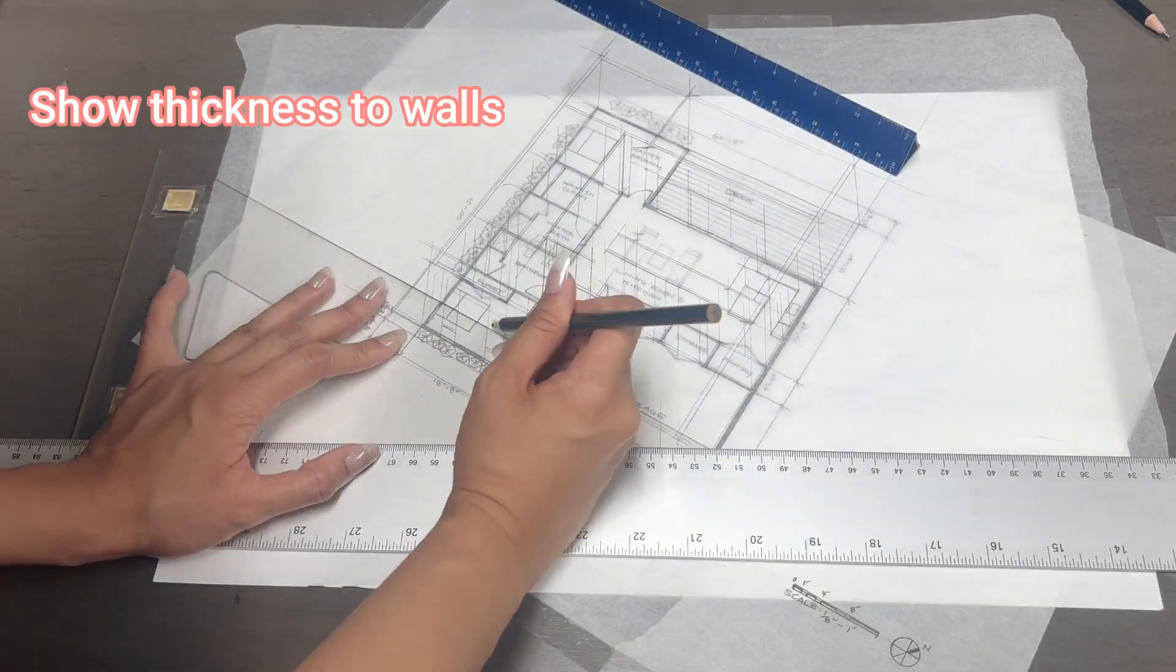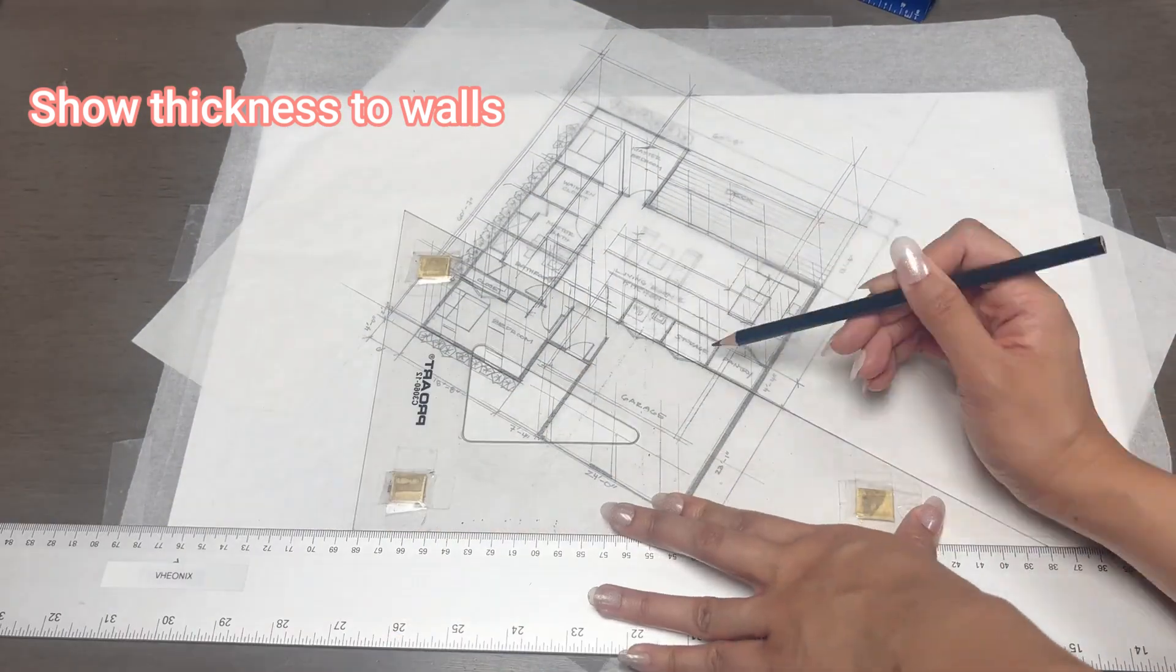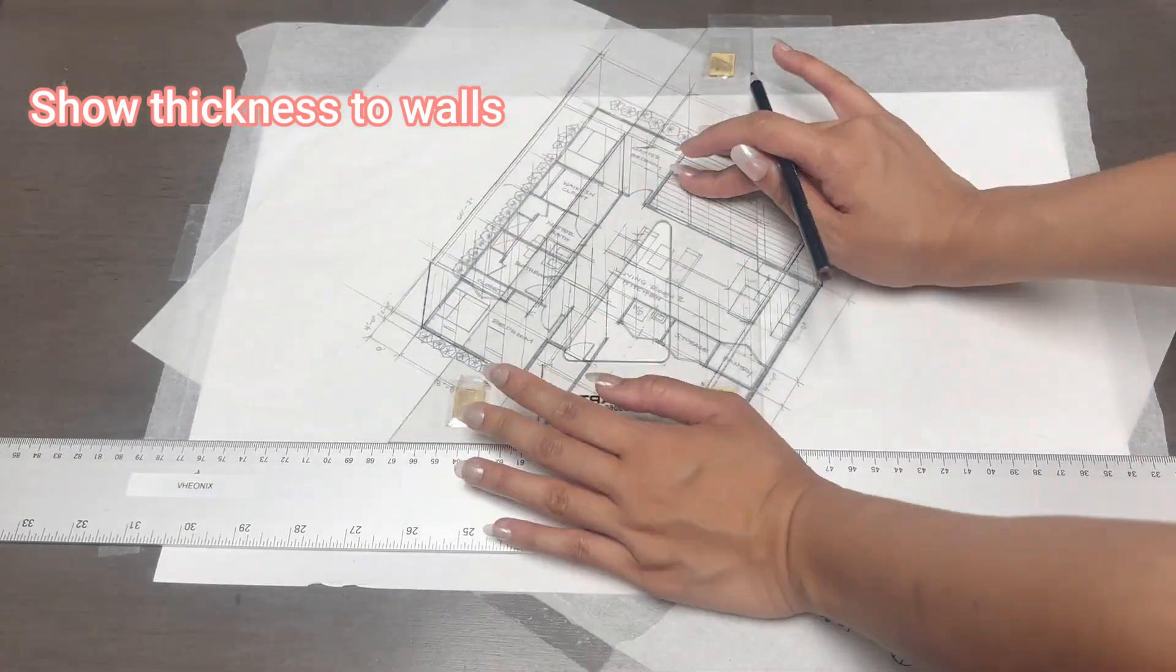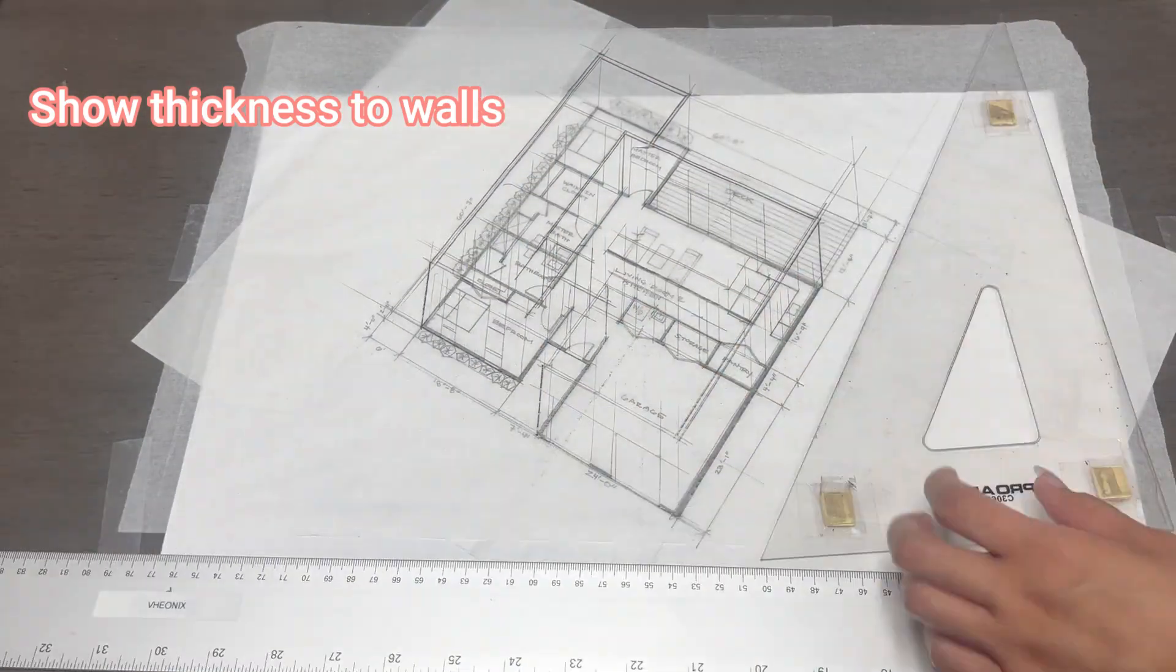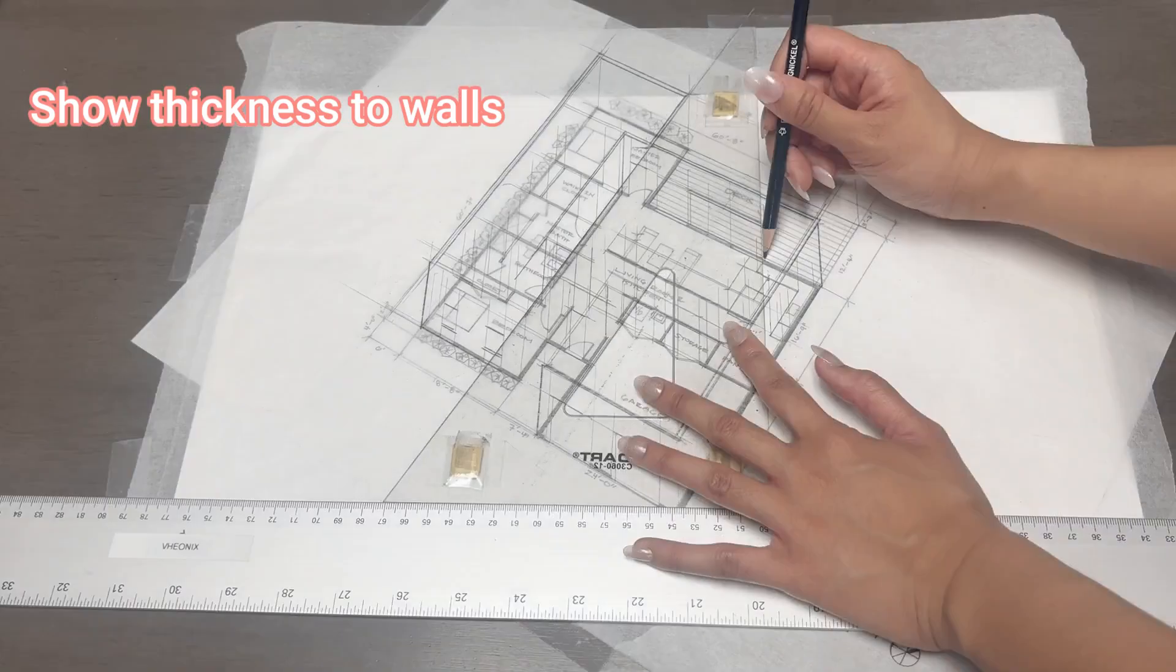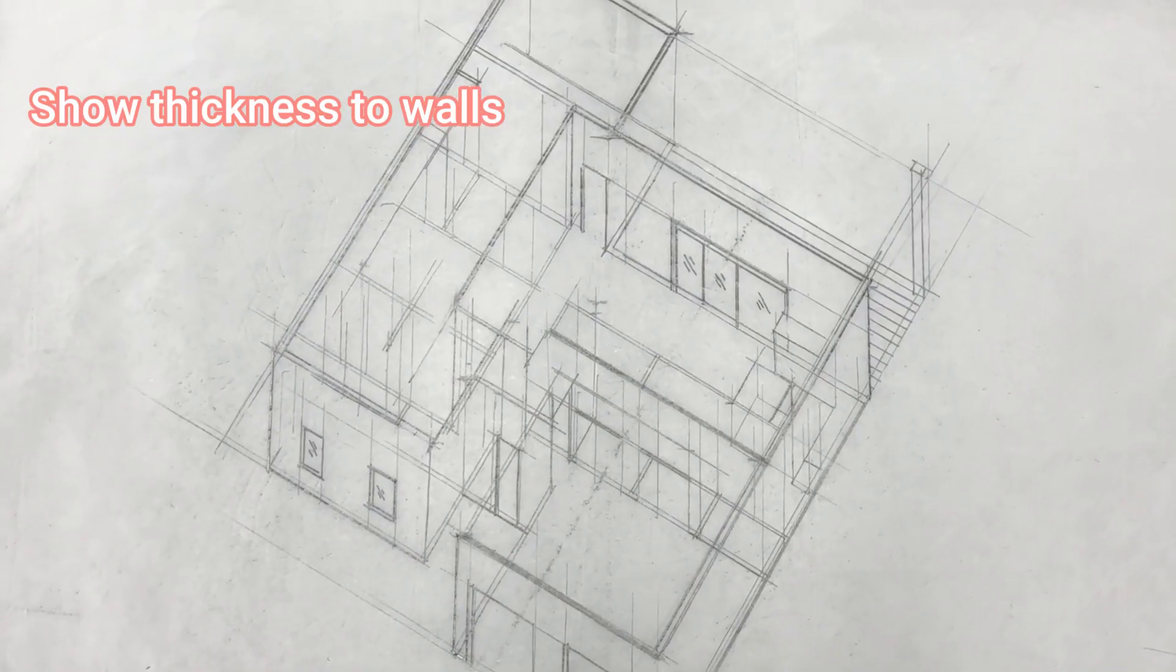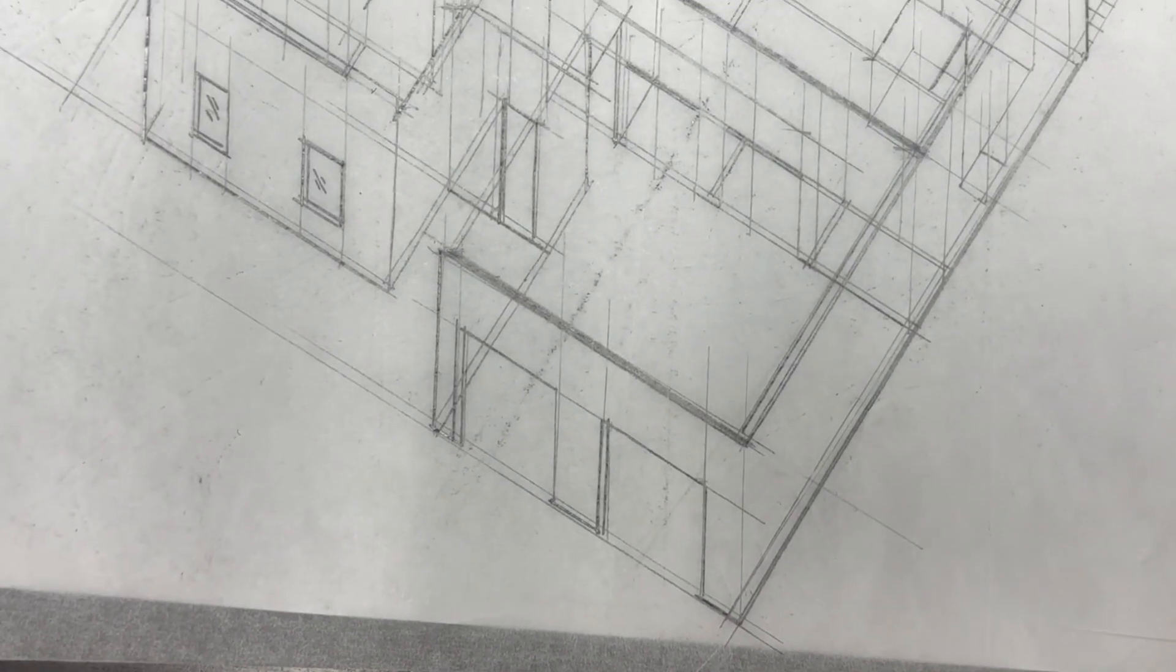You should start seeing the space come together, the height of the windows, connection from the living room to outdoor space, etc. I'm not finished yet, but I wanted to stop here to show you what it looks like without the floor plan at the bottom. You'll see how this approach brings a flat floor plan to life.